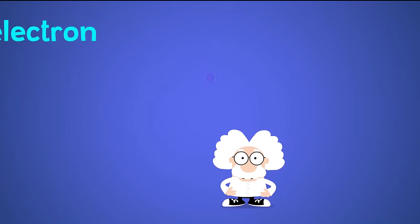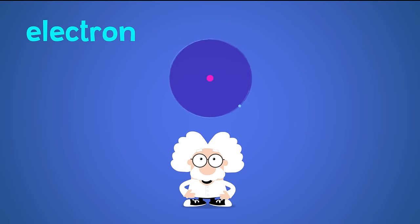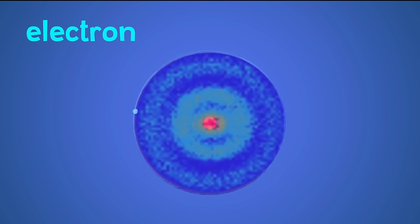Now, electrons are much smaller than protons. And they zip around protons at lightning speed, making up something called an electron cloud around the atom.